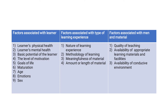Let's see these three factors in detail. Factors associated with the learner include: the learner's physical health, learner's mental health, basic potential of the learner, the level of motivation, goals of life, maturation, age, emotions, and sex. I will list them out first and then explain each point in detail.